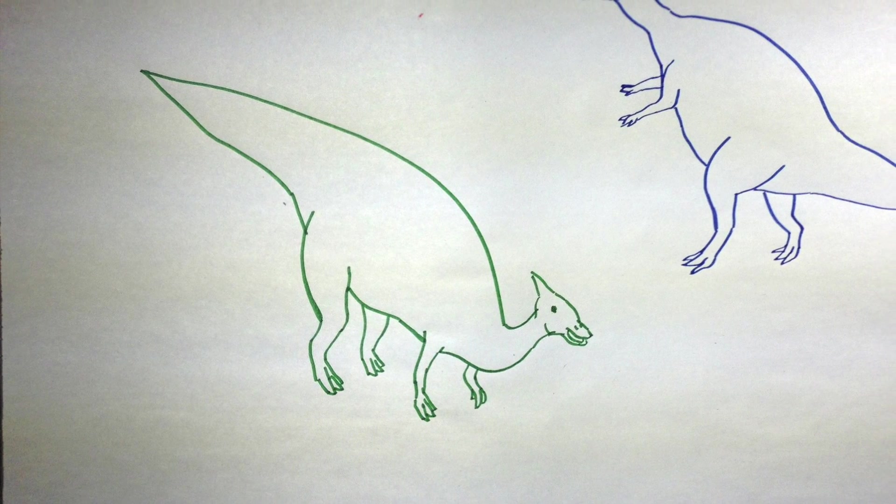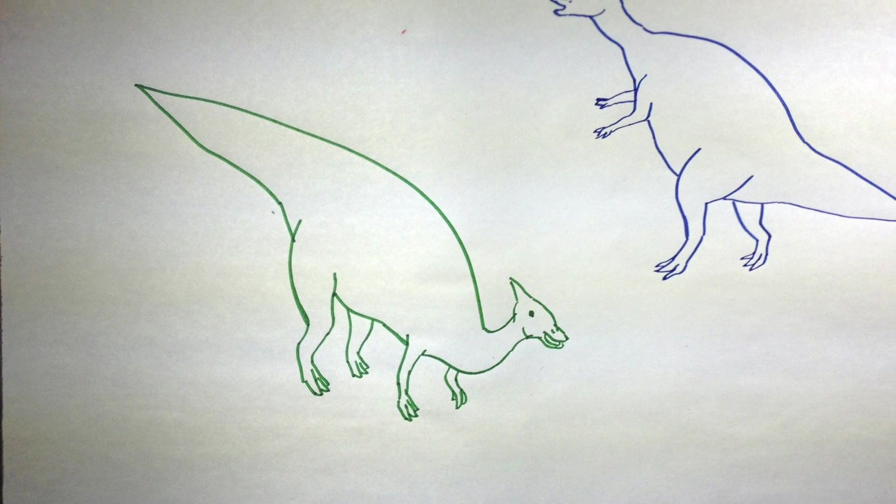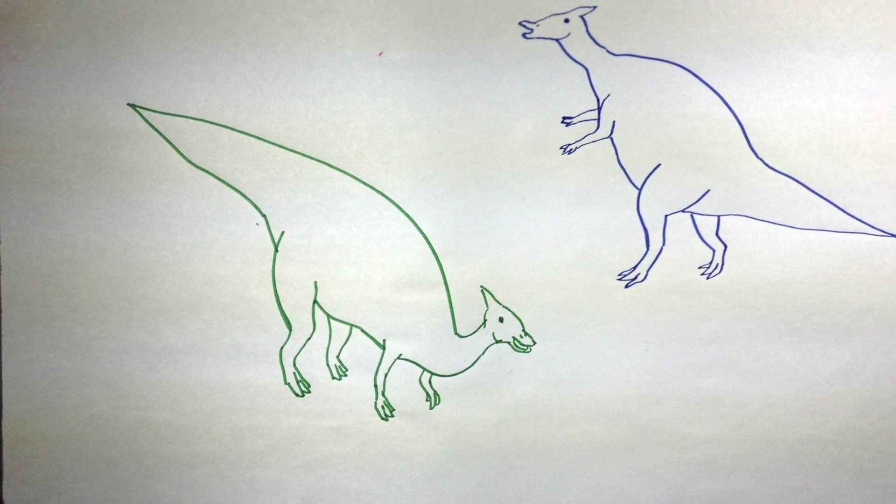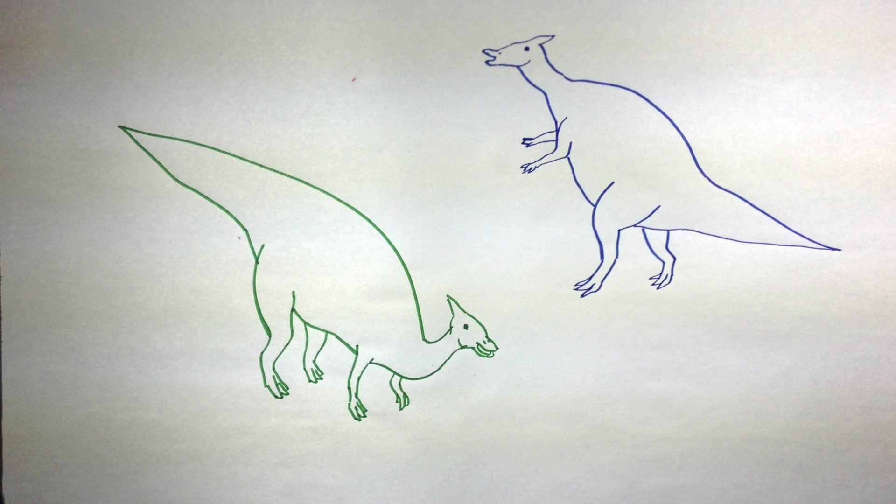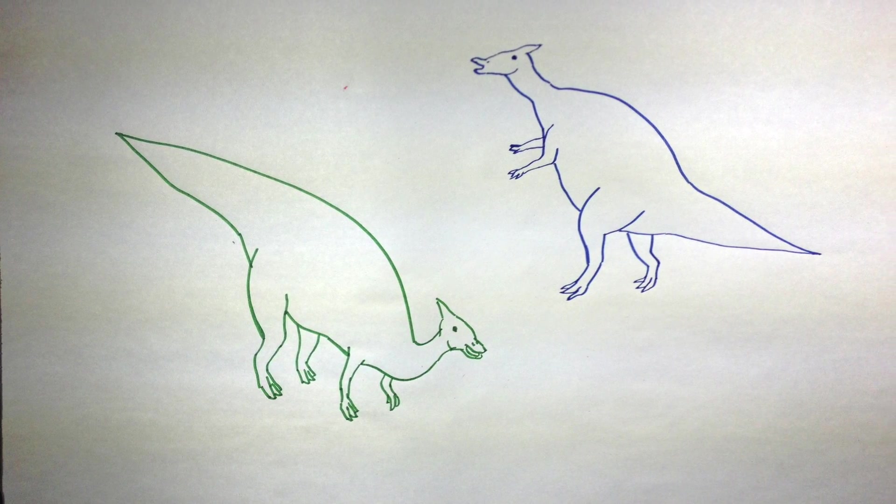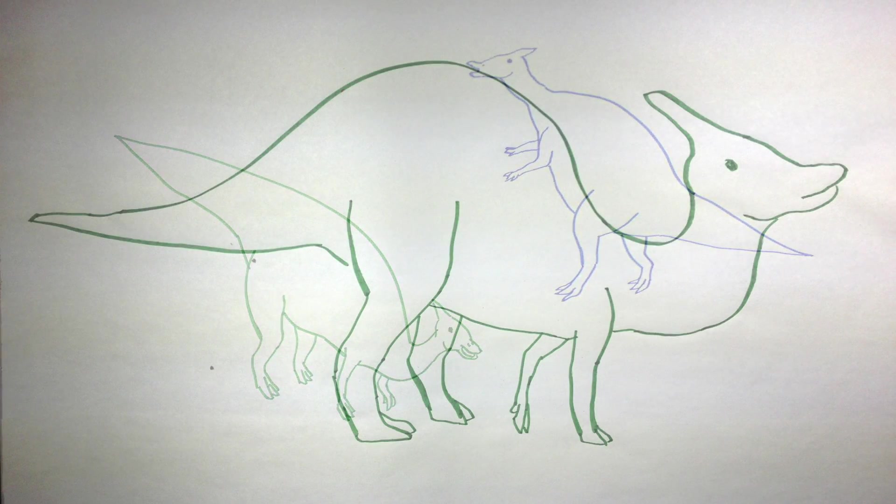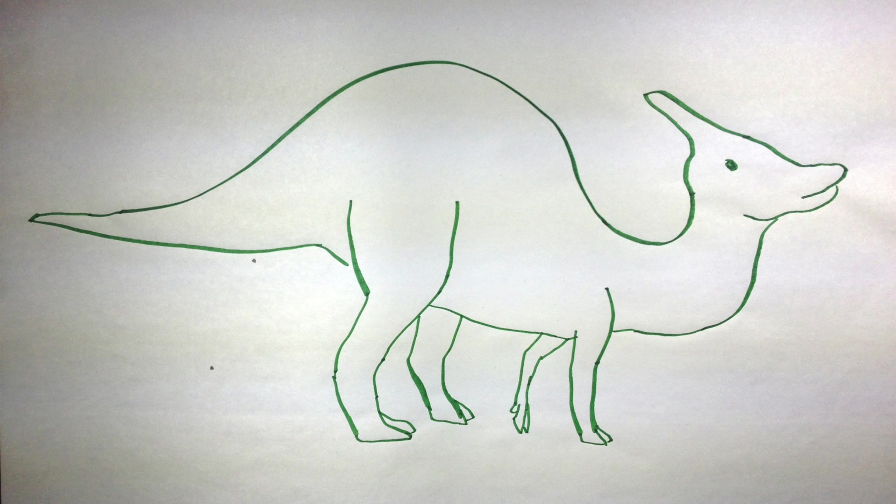Well, no. Like all hadrosaurs, its back legs were longer and stronger than the front legs, so it could have walked on two just as fine. And Saurolophus wasn't even one of the largest hadrosaurs, being only the length of two Hummer SUVs and weighing a little more than an adult male hippo. Others were much larger.